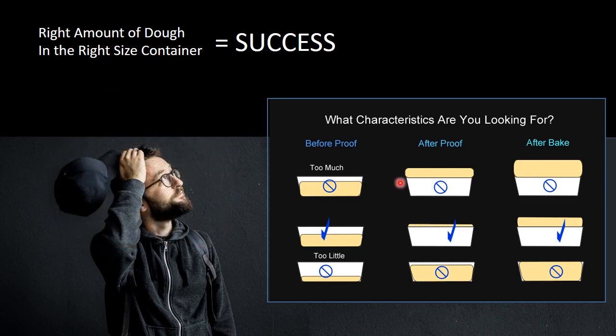On the too much side, you can see that after you proof it, by the time that dough weight has reached its optimum proof time for this size of pan you bake it off and now you've got this ginormous loaf.